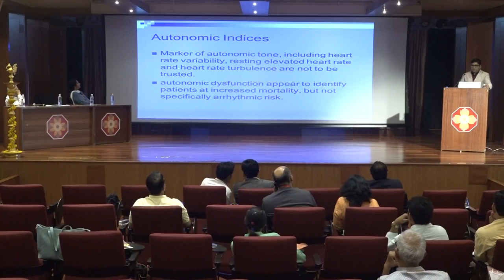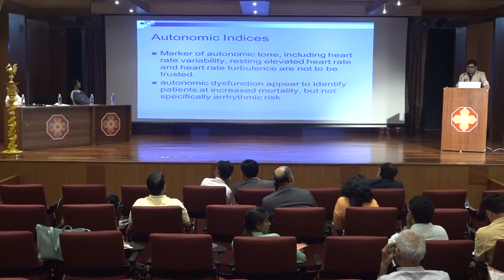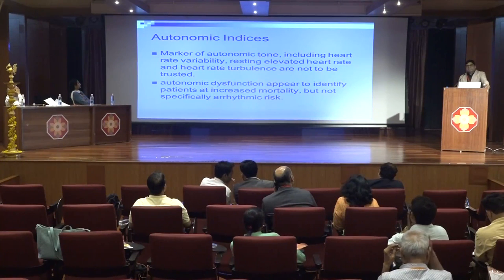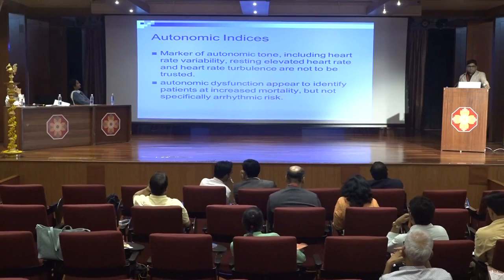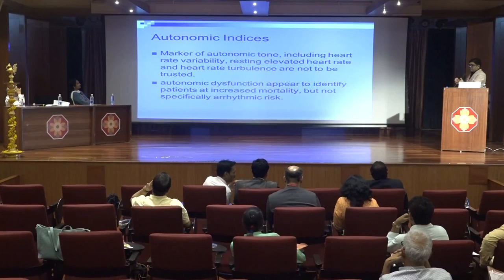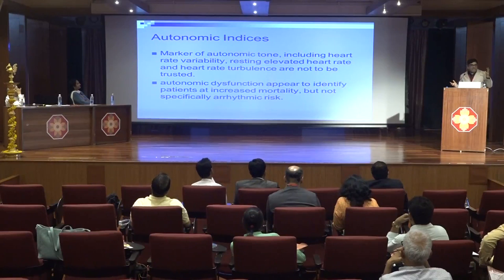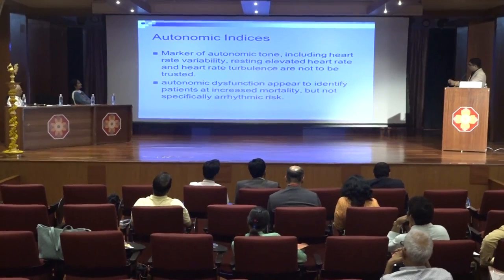Now coming to the autonomic indices. Dr. Deepak has been speaking about it in quite a lot of detail. We are aware there are parameters like heart rate variability, and if someone is having a higher heart rate, heart rate turbulence. We start thinking there is some autonomic dysfunction and this person may have a higher or lower risk of sudden cardiac death. Unfortunately, there is no correlation at all for these parameters.